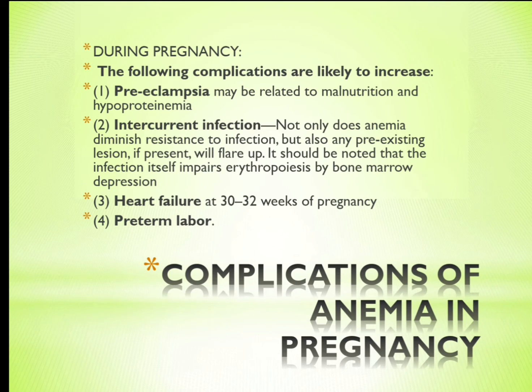Complications of anemia during pregnancy: preeclampsia, which may be related to malnutrition and hypoproteinemia; intercurrent infection — anemia diminishes resistance to infection, and any preexisting lesion will flare up; infection itself impairs erythropoiesis by bone marrow depression; heart failure around 30–32 weeks of pregnancy; and preterm labor.